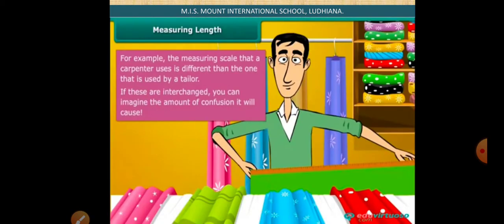For example, the measuring scale that a carpenter uses is different than the one used by a tailor. You can look at the picture. The tailor uses a meter scale which is foldable. If both of them exchange the equipment they use to measure length, a huge amount of confusion will be created.